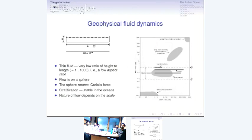We are looking at geophysical fluid dynamics. We want to apply Newton's laws to a fluid, which means we are going to be looking at a field — we can't use laws written for solid body dynamics. We are also looking at a very thin fluid. If this is the horizontal scale of the ocean basin, then the thickness of a line gives the depth. So it is a very thin fluid, on a sphere, so spherical coordinates are important. The sphere rotates, which brings in the Coriolis force. The centrifugal force is accounted for by the deviation of the Earth from a perfect sphere.